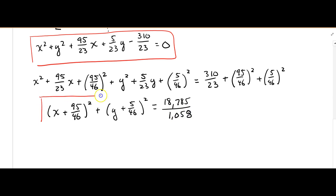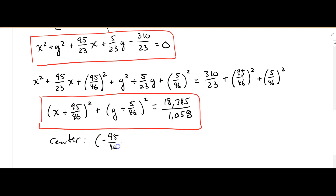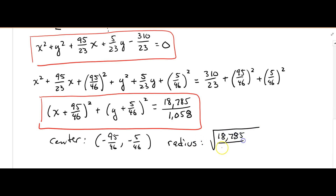So there's our standard form, and we like that because now we know that our center is going to be negative 95/46, negative 5/46, and our radius is going to be the square root of 18,785 over 1058 — which I didn't calculate out, but you can go ahead and calculate that as well.